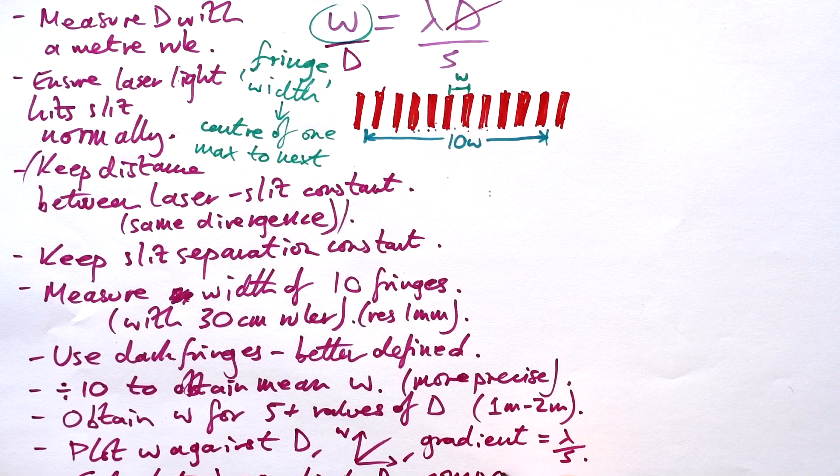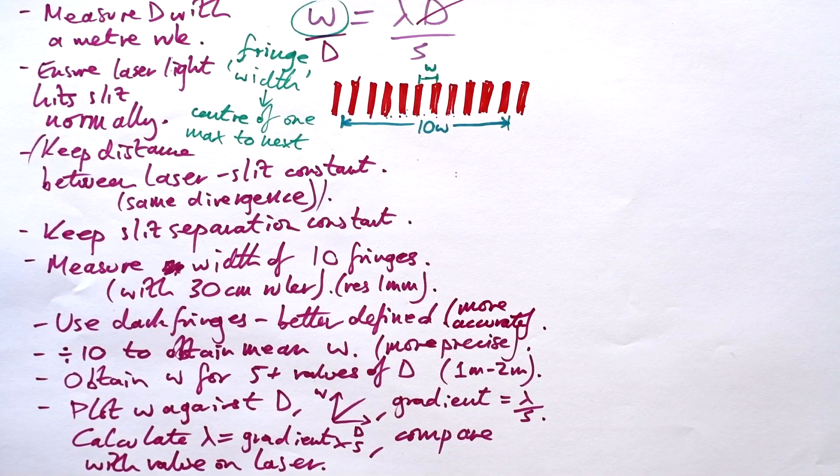And then we can compare with value on the laser. And if it's visible light we should be looking at a wavelength of the order of magnitude times 10 to the minus seven.